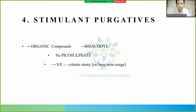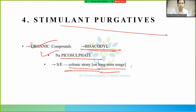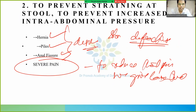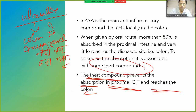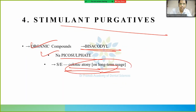Then there are stimulant purgatives — these are organic compounds. Examples include bisacodyl and sodium picosulfate. Long-term use can cause colonic atony.